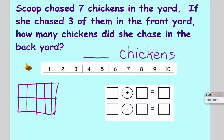If Scoop chased seven chickens, that means there were seven chickens in my entire yard. Now, it's important to decide what's the whole and what's the parts, right? In our number bond, a whole is made up of two parts. In this case, all the chickens in the yard are seven.